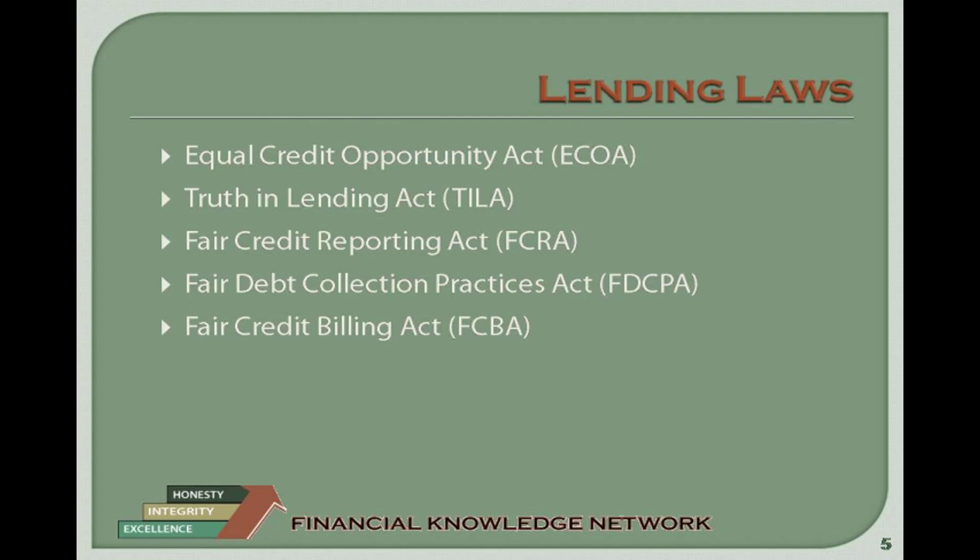Please note, if you live in a community property state, a lender may request information concerning your spouse. Arizona, California, Idaho, Louisiana, Nevada, New Mexico, Texas, Washington, and Wisconsin are community property states, as is Puerto Rico. For income derived from alimony or child support, unless you want it considered as part of your income, the lender cannot discount or refuse to consider consistent part-time income, annuities, pensions, alimony, or child support payments.